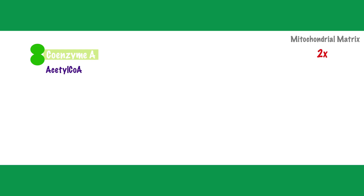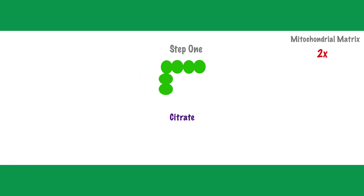The citric acid cycle is essentially a series of eight chemical reactions. First, coenzyme A detaches from the acetyl molecule, freeing it to return and shuttle more acetyl groups or participate in other cellular processes. The acetyl molecule then combines with oxaloacetate, a four-carbon molecule, to form a six-carbon molecule called citrate — a reaction made possible by the enzyme citrate synthase. The citric acid cycle continuously regenerates oxaloacetate so it is ready to combine with incoming acetyl molecules.